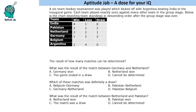Below is the chart depicting team standings in descending order after the group stage. Belgium cannot have two wins and cannot have zero wins, so Belgium should have one win. To find losses and draws, just add the number of wins, since total wins equal total losses. So nine plus three is twelve — twelve matches should have been in the loss column as well.